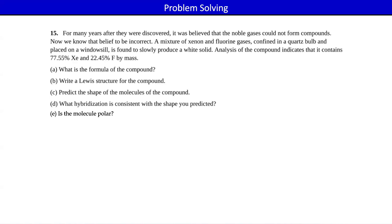So what's the formula of the compound? If you're mathematically minded and you see the ratio, you might be able to see it. If you want to show the work: whatever you have the fewest moles of, assume the subscript for that one is 1. For every one mole of xenon, 1.182 moles of fluorine over 0.5907 moles of xenon gives a number really close to 2 — maybe 1.999, but really close to 2.